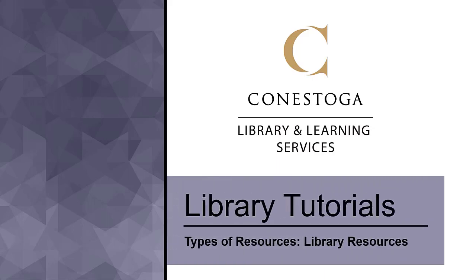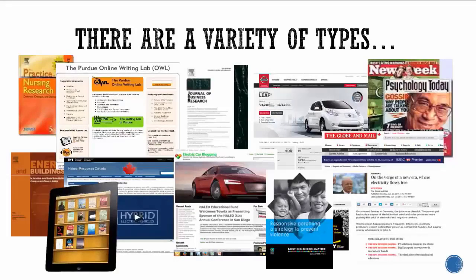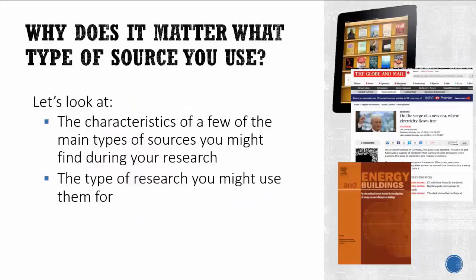Selecting resource types. What type of resource is most likely to have information you need? When you search the library, as well as the internet, you'll find a variety of types of sources are available. Why does it matter what type of source you use? We'll take a look at the characteristics of a few of the main types of sources you might find during your research, and the type of research you might use them for.